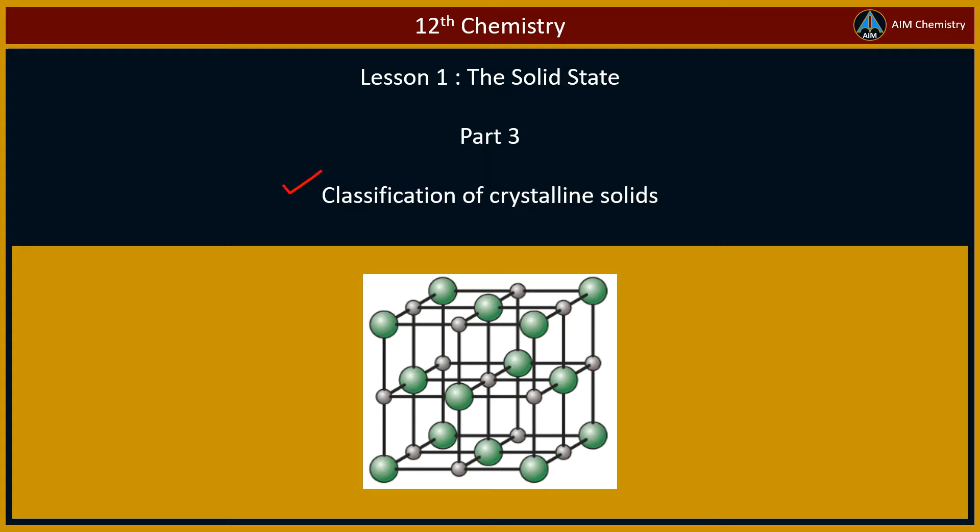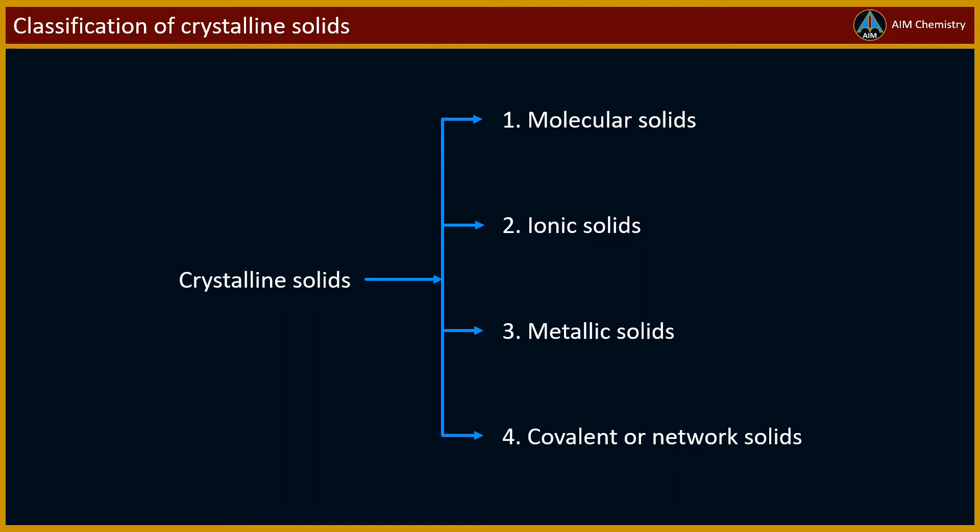We classify crystalline solids on the basis of interparticle forces and bonding. Crystalline solids are classified into four types: molecular solids, ionic solids, metallic solids, and covalent or network solids. Let's learn each one of this in detail.